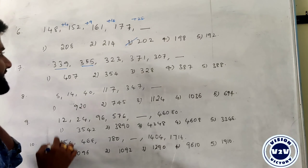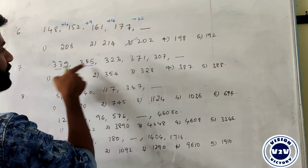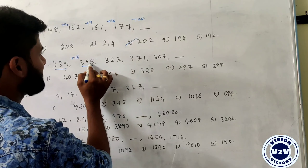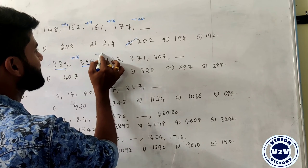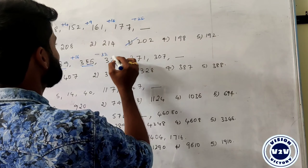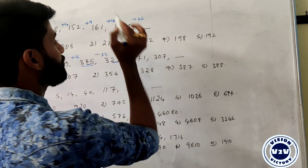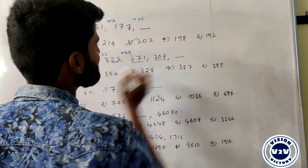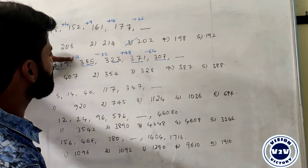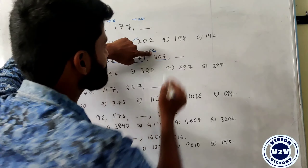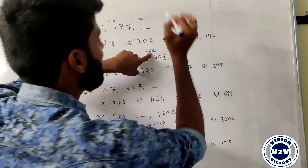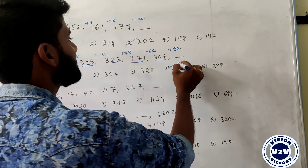Next question: 339, 355. The value increases by plus 16 here. Then we have subtraction of 32, then plus 48, then minus 64 — alternating signs with multiples of 16. The next value: 165 times 5 is 80, so 307 plus 80 equals 387. The answer is 387.